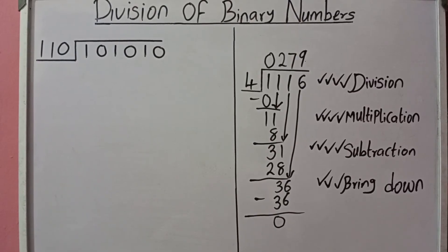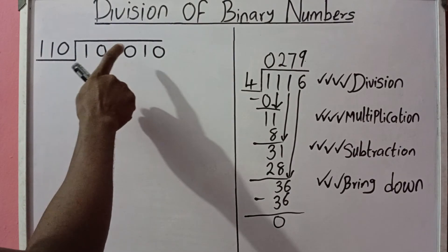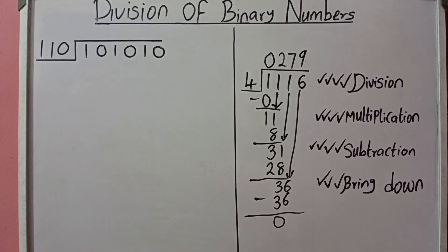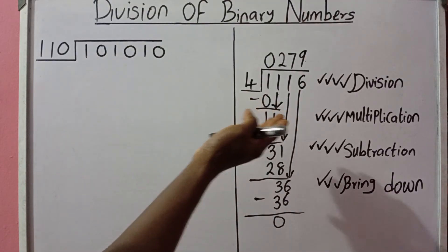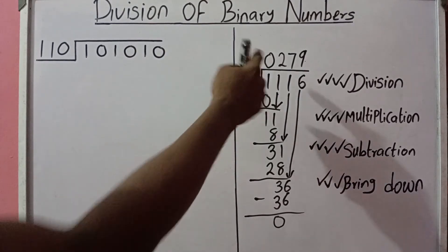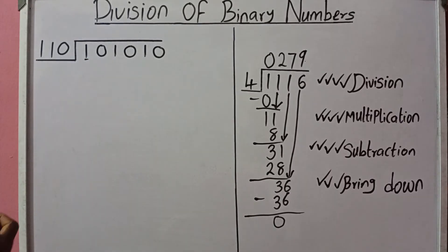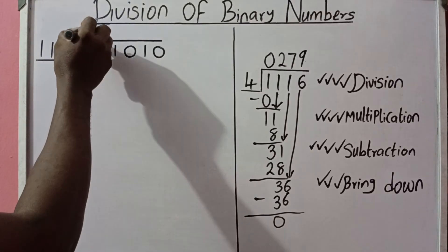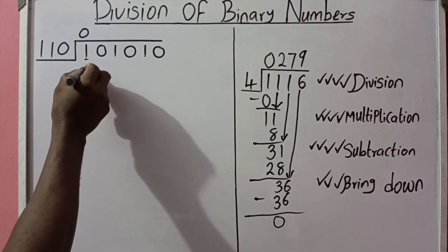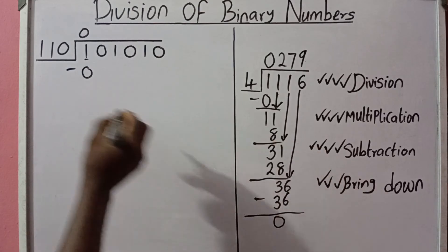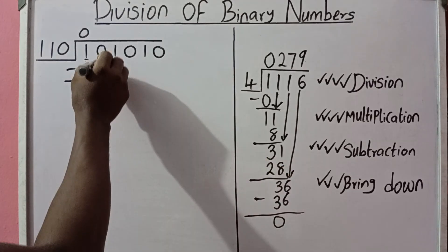The main question is 101010 base two divided by 110 base two. We use the same long division approach, digit by digit. First step — division: can 110 go into 1? No, so we write zero. Multiplication: 0 times 110 equals 0. Subtraction: 1 minus 0 equals 1. Bring down the next digit, which is 0, giving us 10.